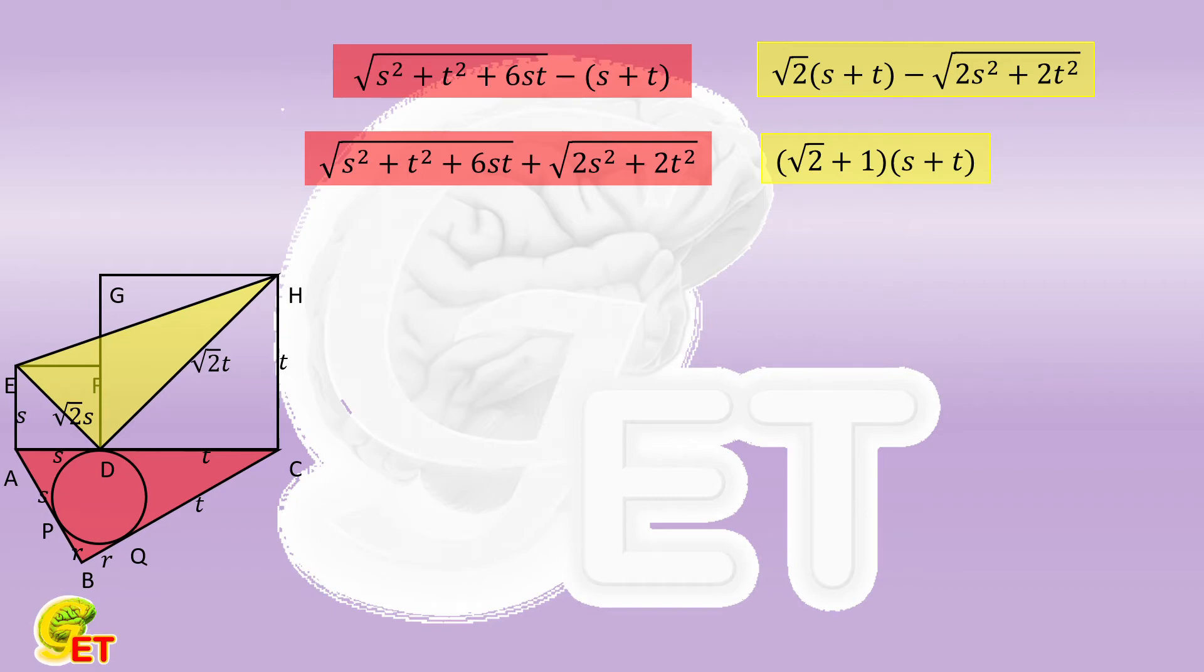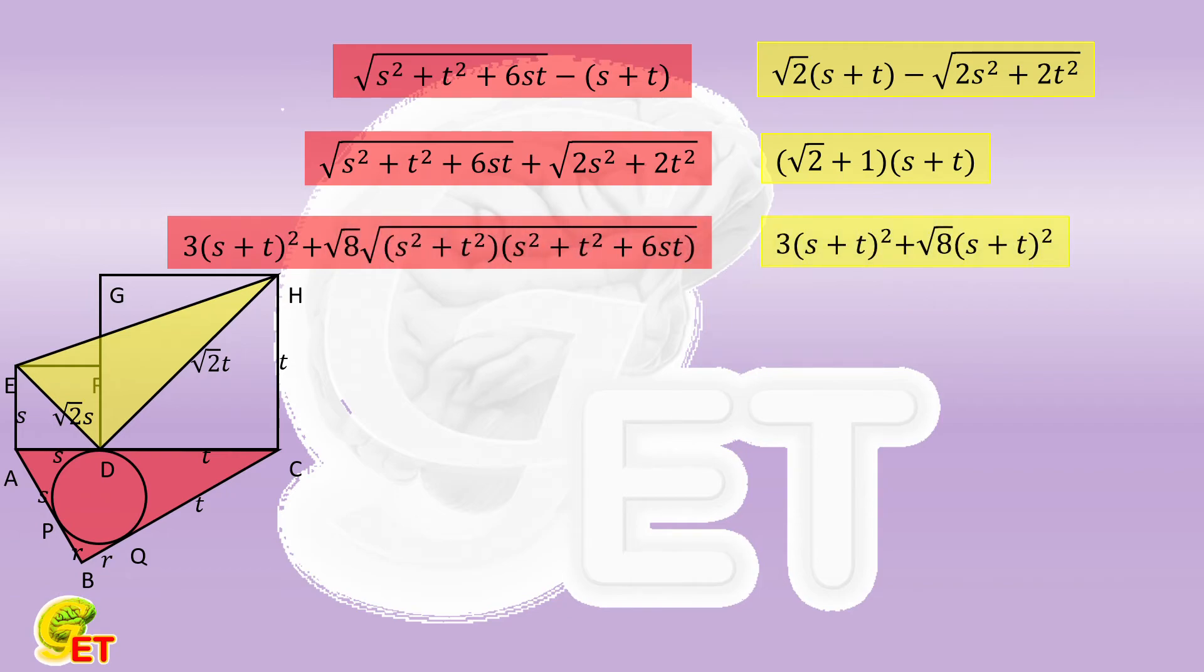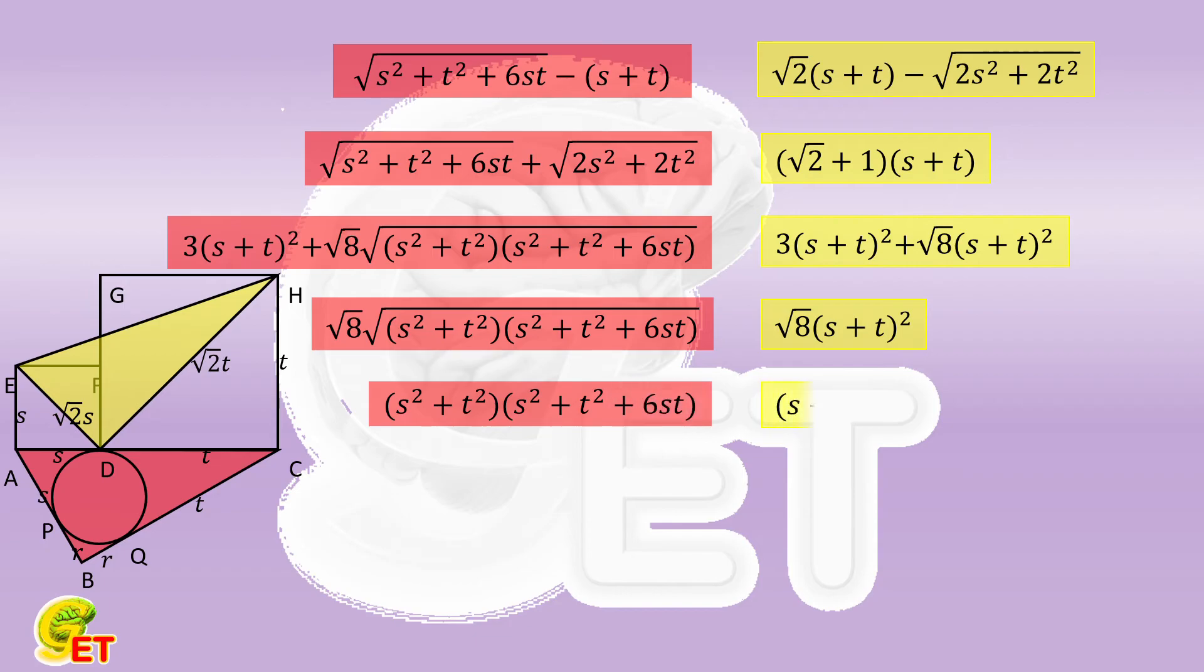They are both positive, so we can calculate the square of them, and get these two. By subtracting 3 times square of S plus T, we further get these two. By calculating the square again, we arrive at here. Just expanding them a little bit, we are here.